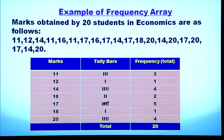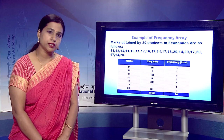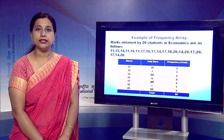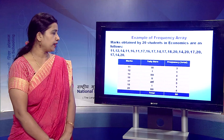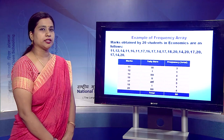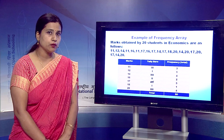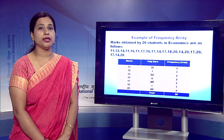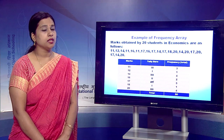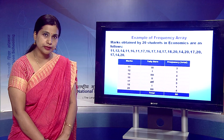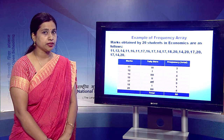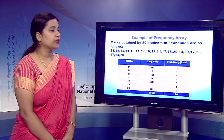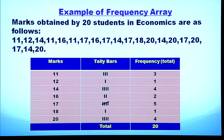In this way we construct tally bars. The table has three columns: marks, tally bars, and frequency. At the end, the total frequency is counted — here it comes to 20 — which serves as a cross-check to confirm no student has been missed.